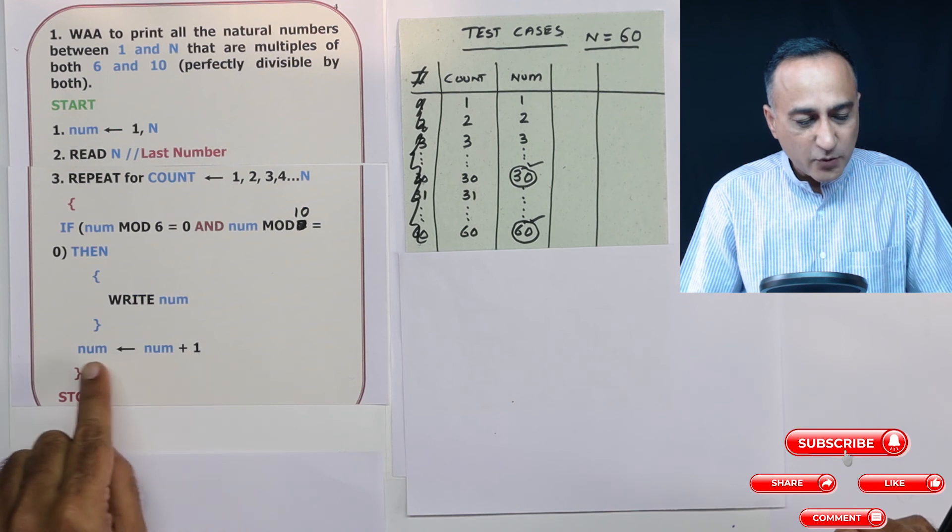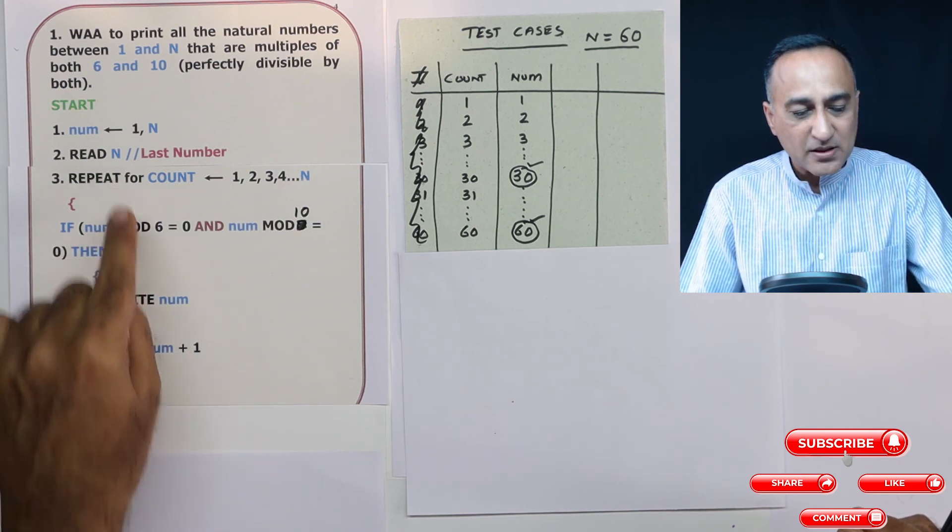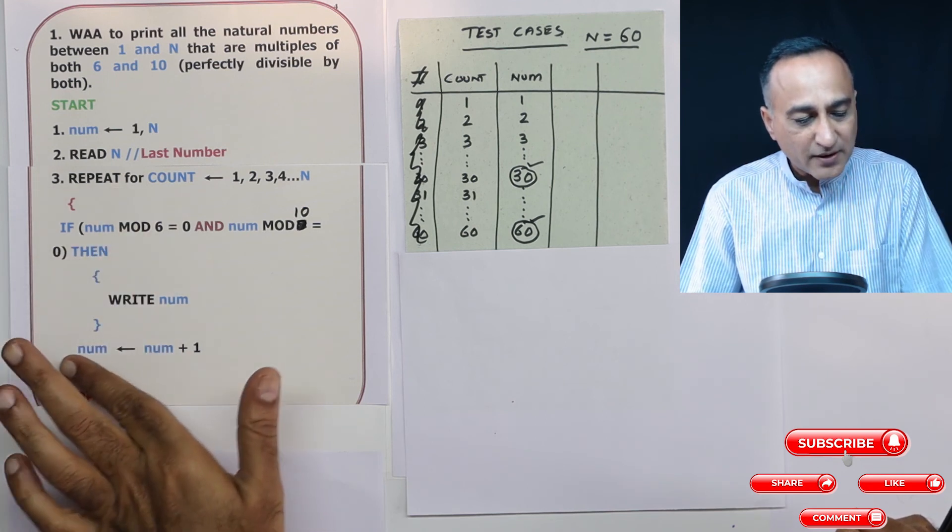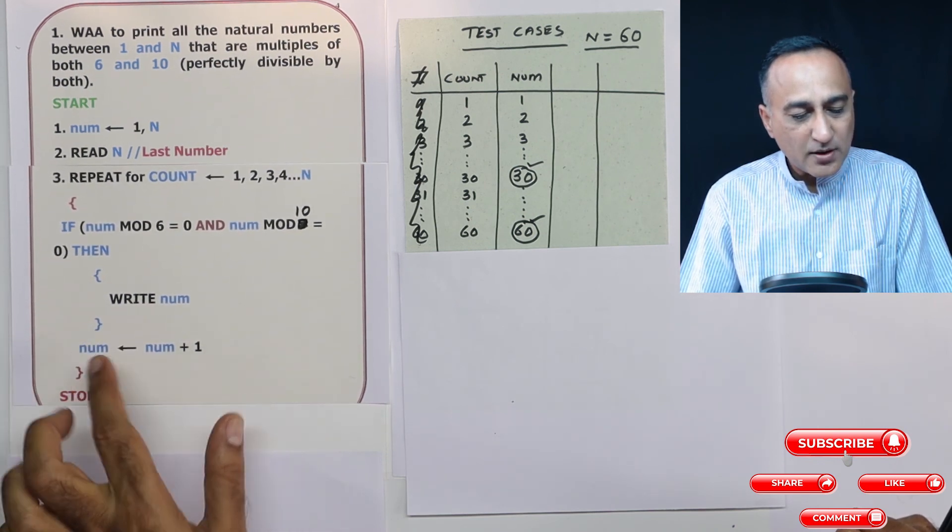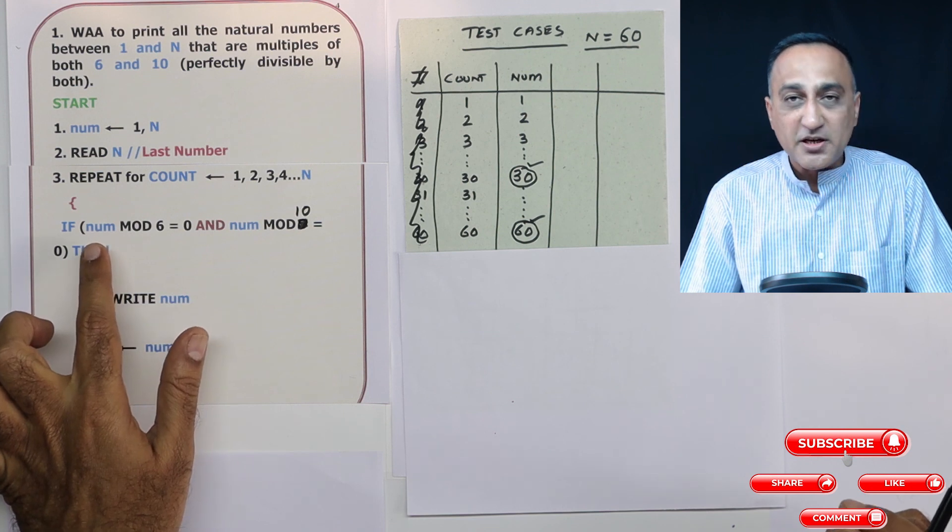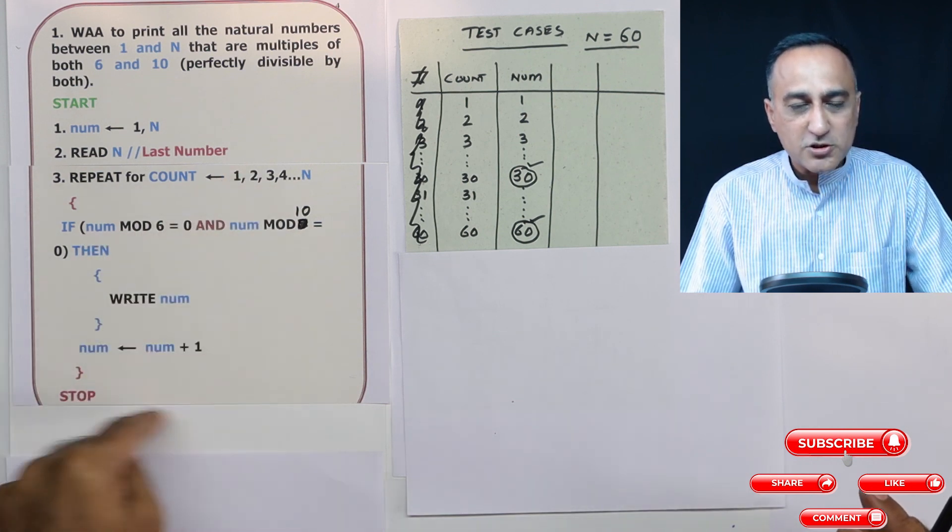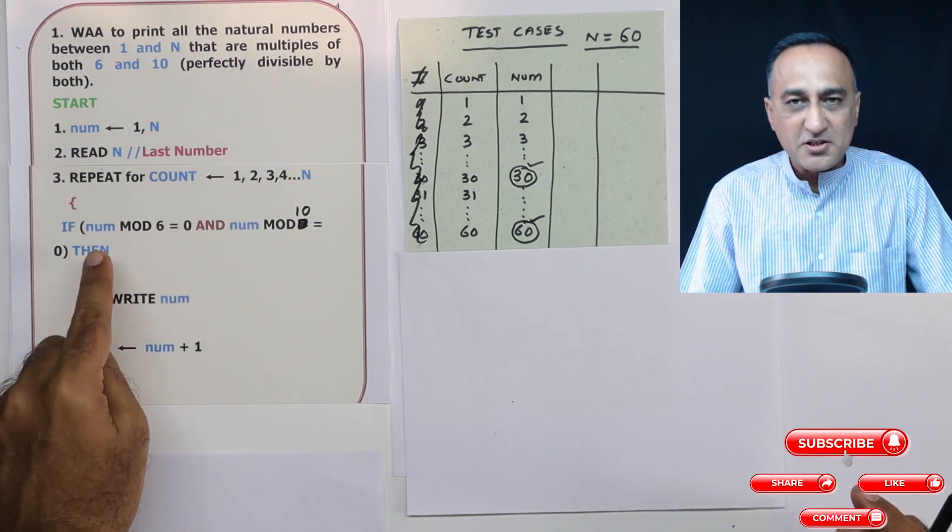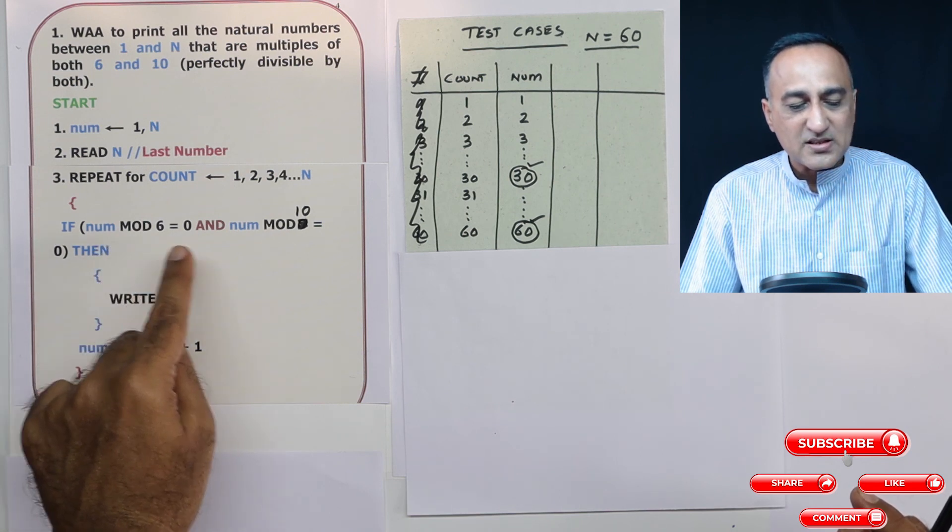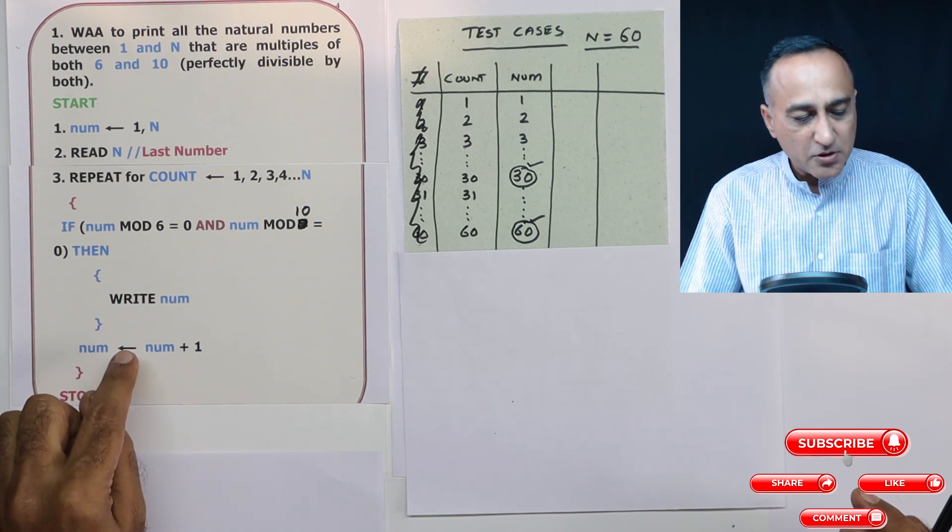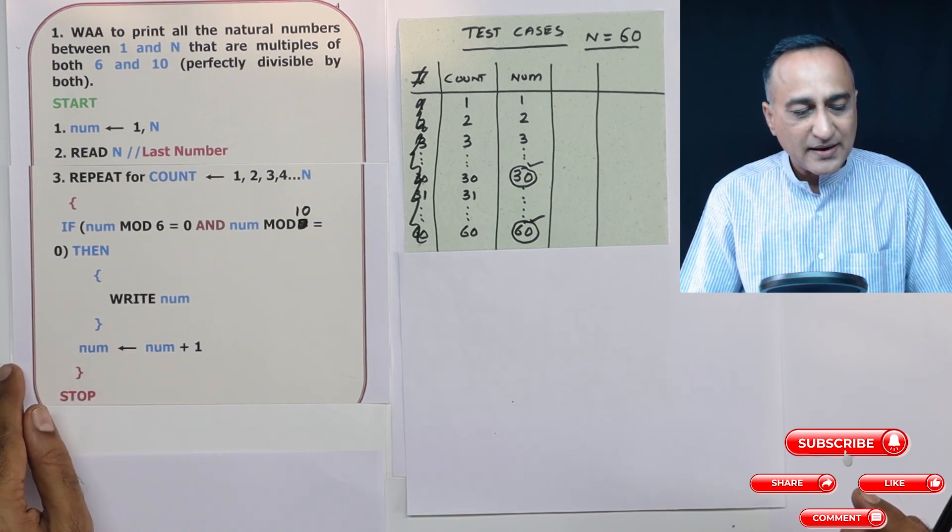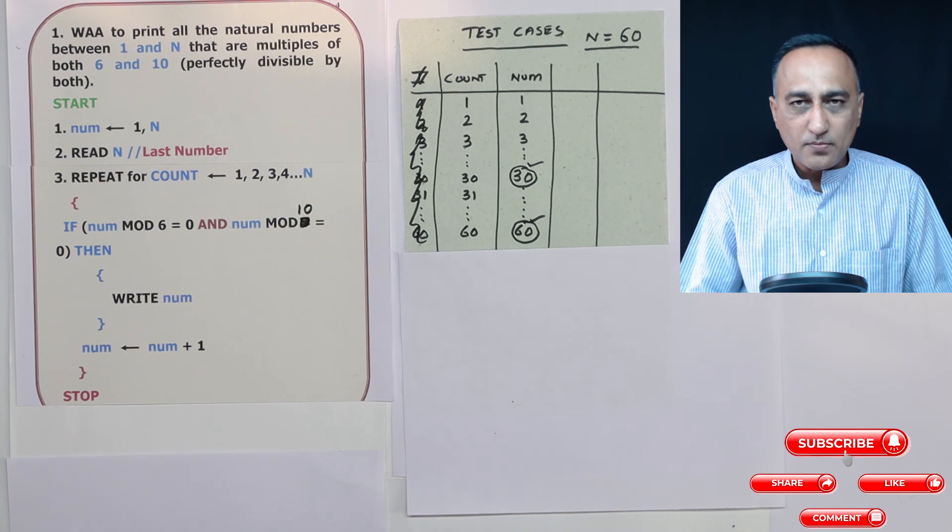Most important: do not forget to increase number by one every time in the repeat count. If you forget this step, you will get no output because this number is only being checked with one. It will go through this loop 60 times, every time it is only checking with one. And since one is not divisible by 6 and 10 perfectly, no number will be printed. So this is one important thing which you tend to miss when you're writing the logic on your own.